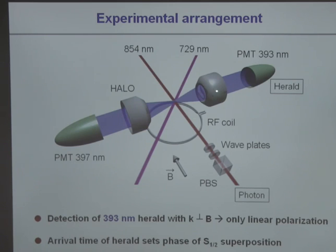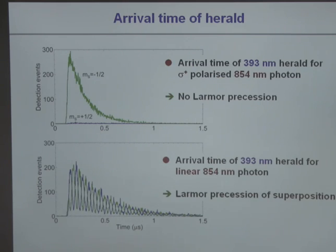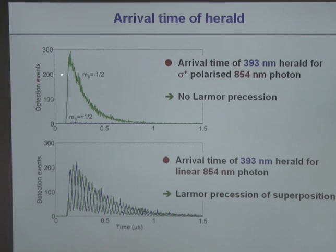The herald is picked up with the high-aperture lenses and sent to detectors. In this first experiment we use weak laser pulses as photons — of course, if there is a scattering event, a single photon is absorbed, never more than one. This shows the arrival time distribution of the heralds, which looks very similar to single photon creation because it is the same process, only now with full polarization control. The first plot shows the arrival time distribution of the herald when sending sigma-polarized 854 nm photons, conditioned on subsequent detection of a certain atomic state. When sending sigma-polarized light, the atom ends up always in the m_s = -1/2 state and never in the m_s = +1/2 state.